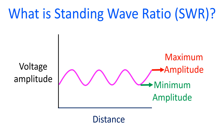Standing wave can be considered as a resultant of forward and reflected waves together. Standing wave ratio, or SWR, is the ratio between the maximum and minimum amplitudes of the standing wave. The highest level of SWR occurs when the antenna is not connected, or when there is a short circuit in the transmission line.